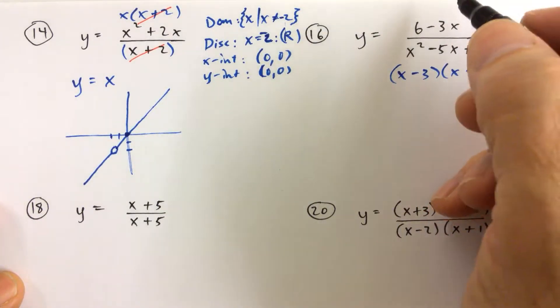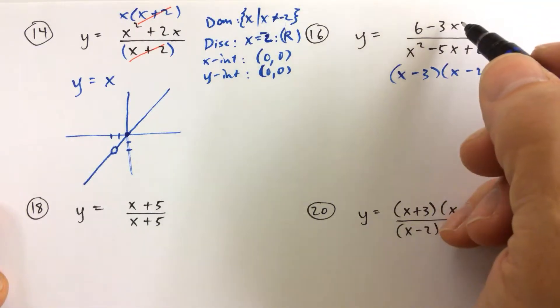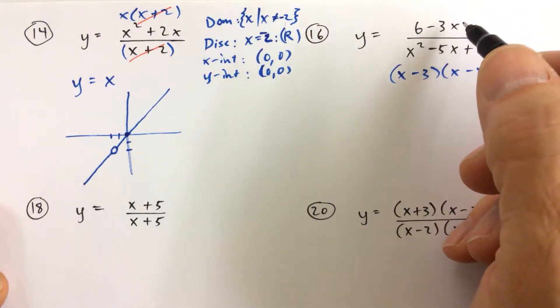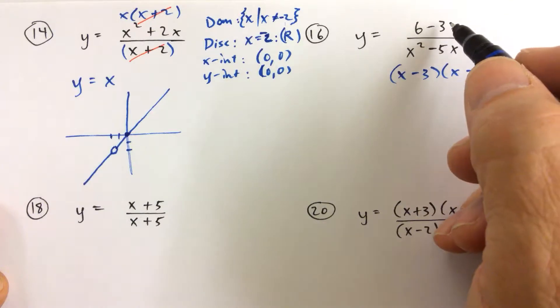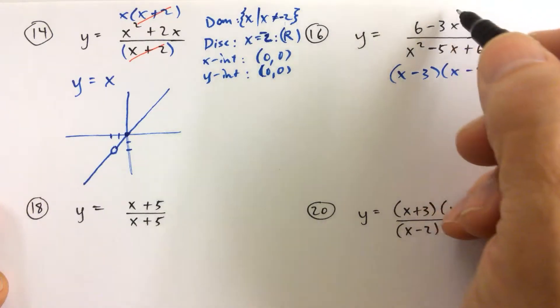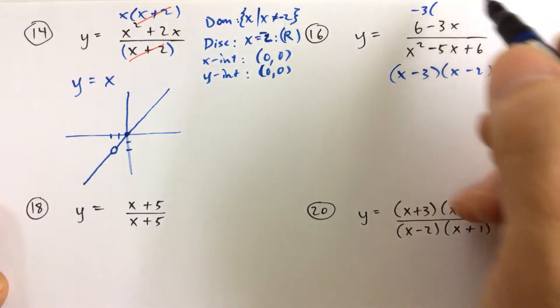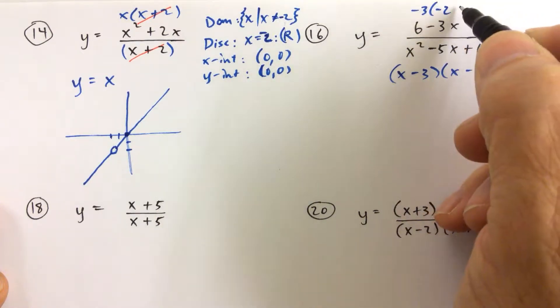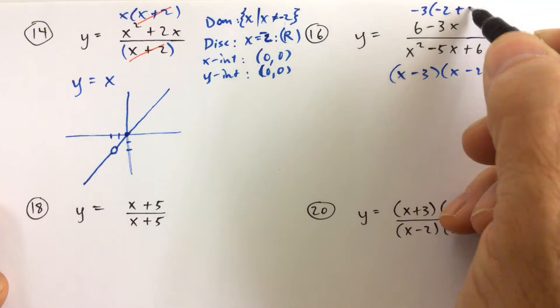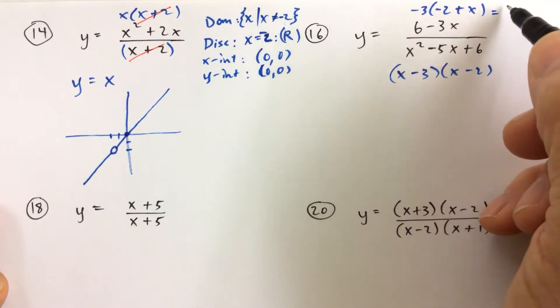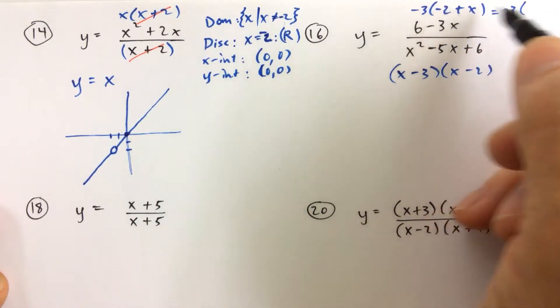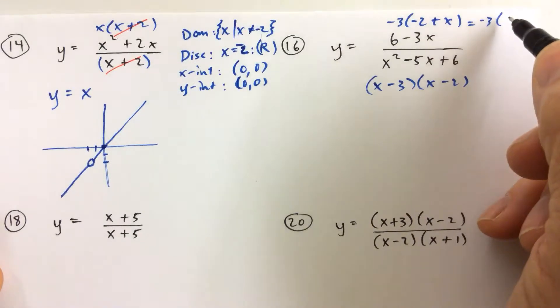We're also going to go ahead and factor the numerator. And I see something that I think will be really helpful. That is, I'm going to factor out a negative 3 from both terms. And when I factor out a negative 3 from both terms, I get negative 2 plus x, which is actually equal to, if I switch these terms around, x minus 2.